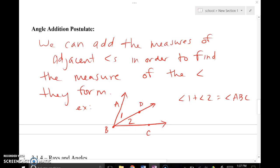Angle addition postulate tells us that we can add the measures of adjacent angles in order to find the measure of the angle they form. So this picture should tell the whole story. This angle, angle 1, ABD, and this angle, angle 2, CBD, if you add those two angles together, that should give you the large angle ABC.